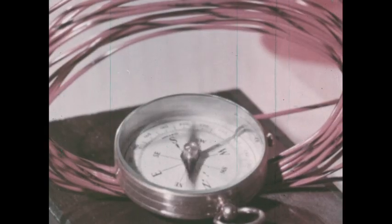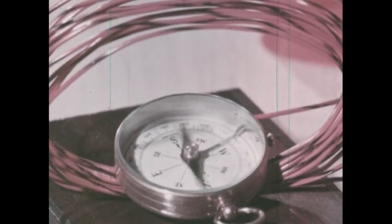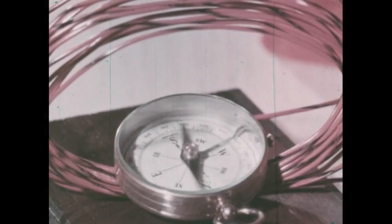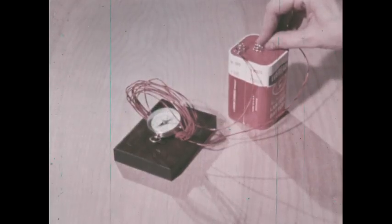What does the movement of the compass needle show? How could you use this simple apparatus as an electric meter?